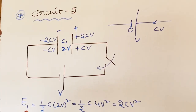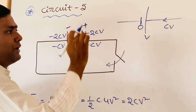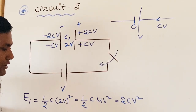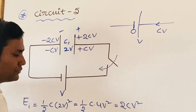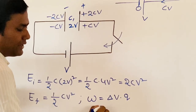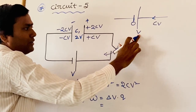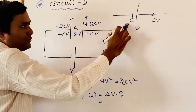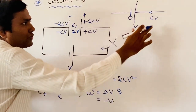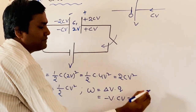Now, observe carefully. In order to calculate the work done by the battery: work done by the battery equals ΔV × Q. Here ΔV — initial potential V, final potential 0, so final minus initial gives −V. With Q = CV, the work done becomes minus CV².